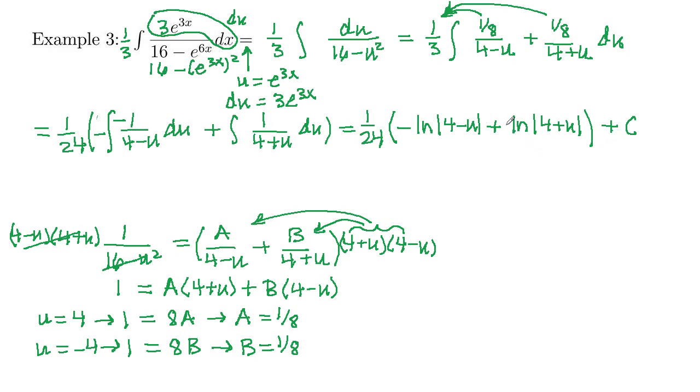Here, we've got subtraction outside the log. So that's going to be division inside. This will be our numerator. And the subtracted one will be our denominator. So we can rewrite this as 1 twenty-fourth, natural log, absolute value, numerator 4 plus u, and denominator 4 minus u, plus constant because it's an indefinite integral. Subtraction outside is division inside.